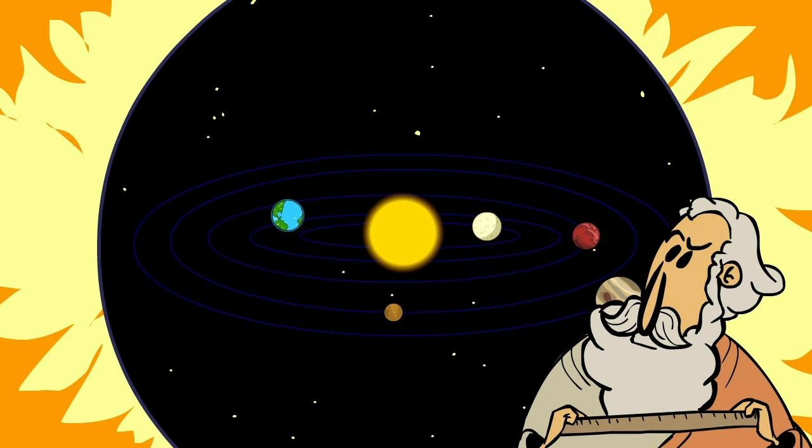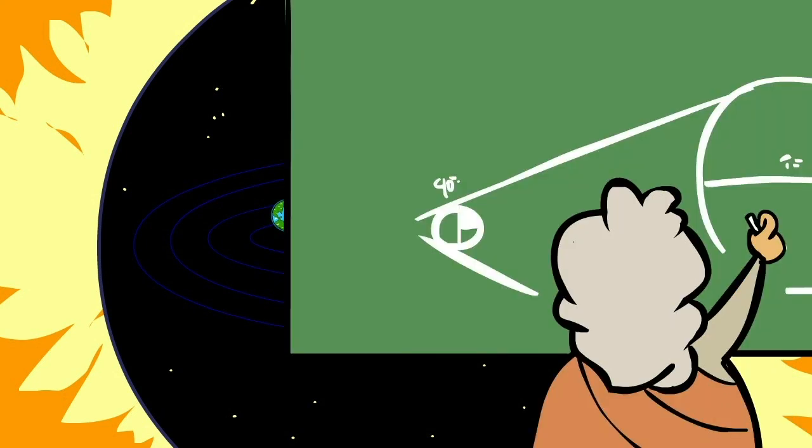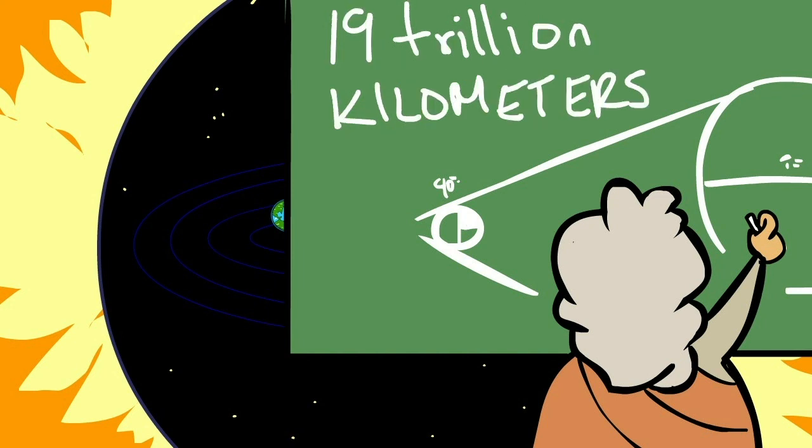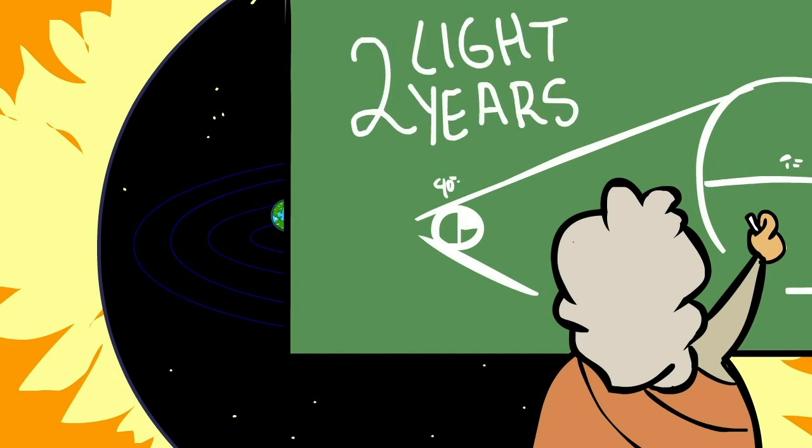So, by using angles and math calculations, he got to the conclusion that the universe should measure about 100 trillion stadiums, meaning about 19 trillion kilometers, or, as scientists say, two light-years.